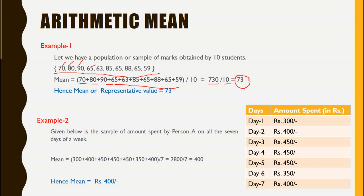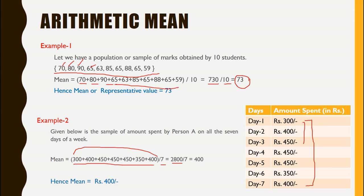In the second example, we are given a table which shows the amount of money spent by person A in a week. If we want to find the average amount of money that person A spends in a week, we need to find the mean of this series. We will add all the terms and divide by the total number of terms. When we add all these terms, the total turns out to be 2800. Because there are only 7 terms, we divide by 7 and the result turns out to be 400. Hence, we can say the mean is Rs. 400, or on average person A spends Rs. 400 every day.